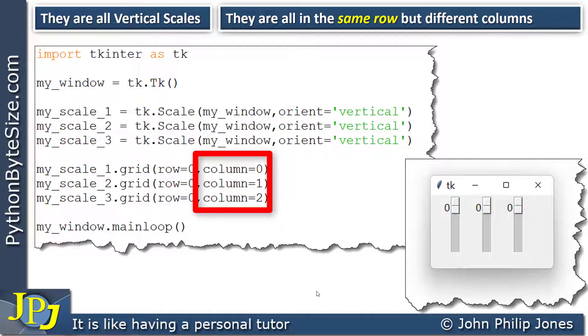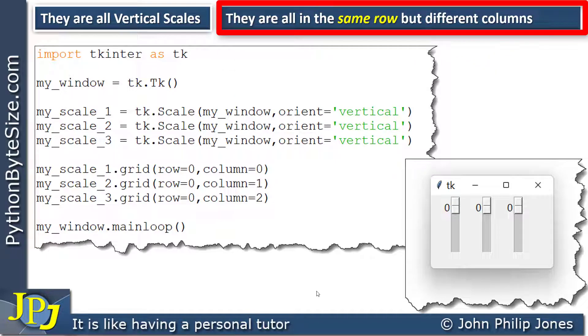Whereas if you look here you can see that the columns are all different. They go from zero to one to two and we therefore have taken note of this information which is telling us they are all in the same row but different columns.